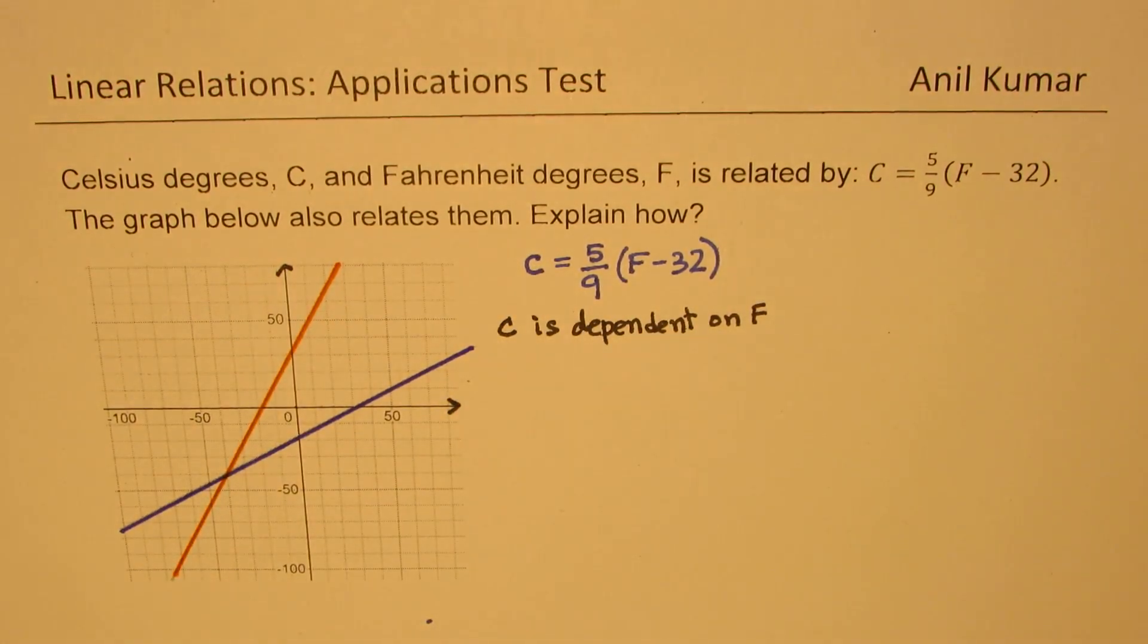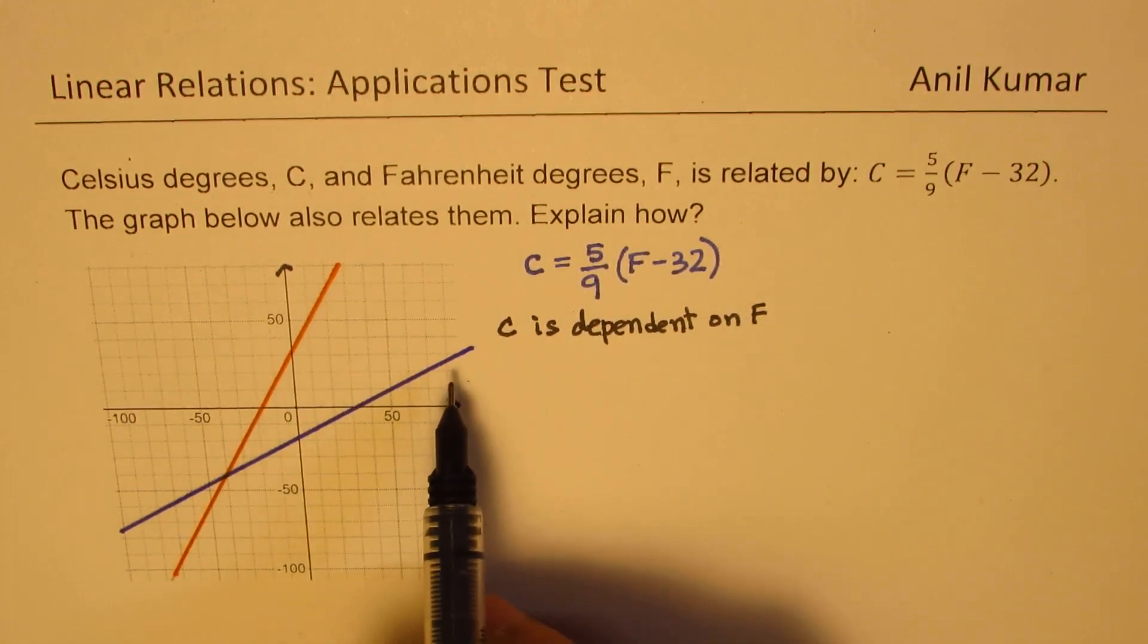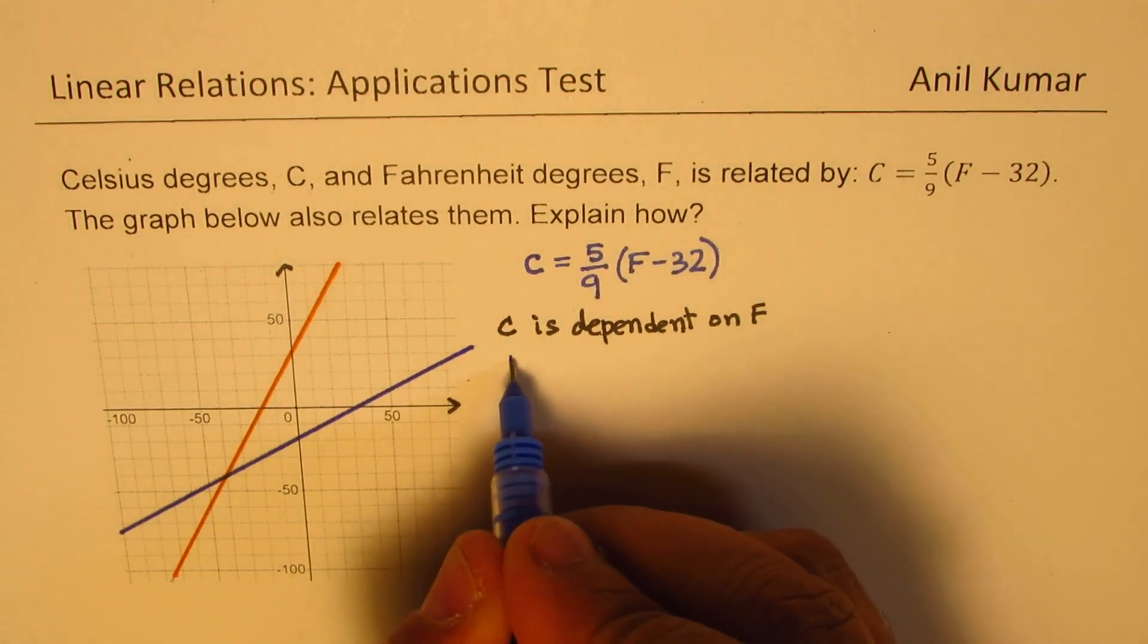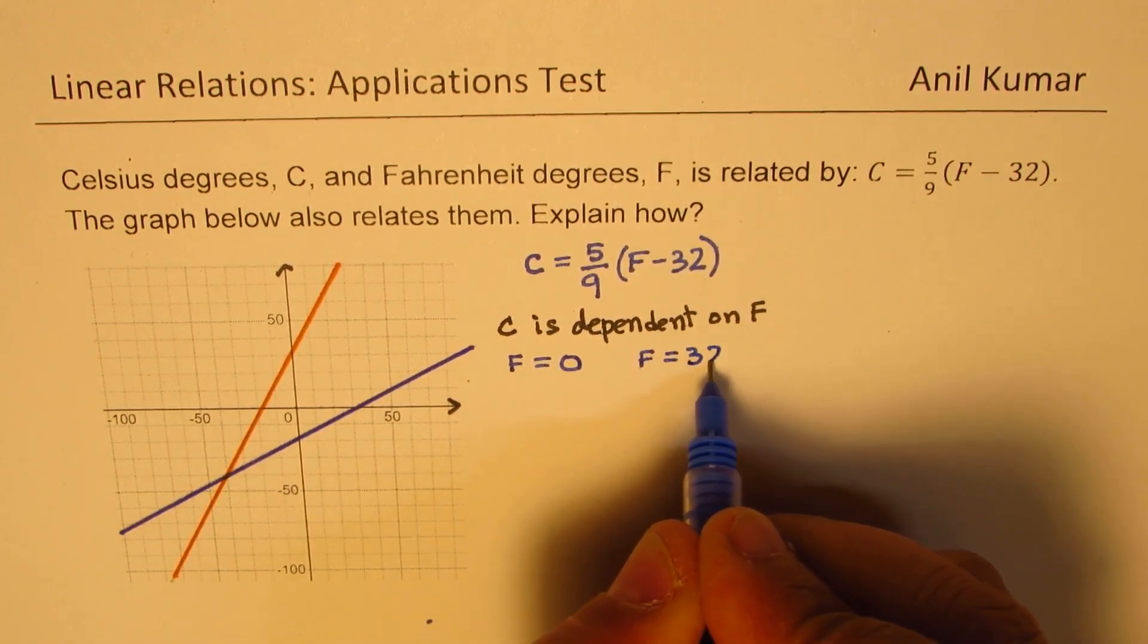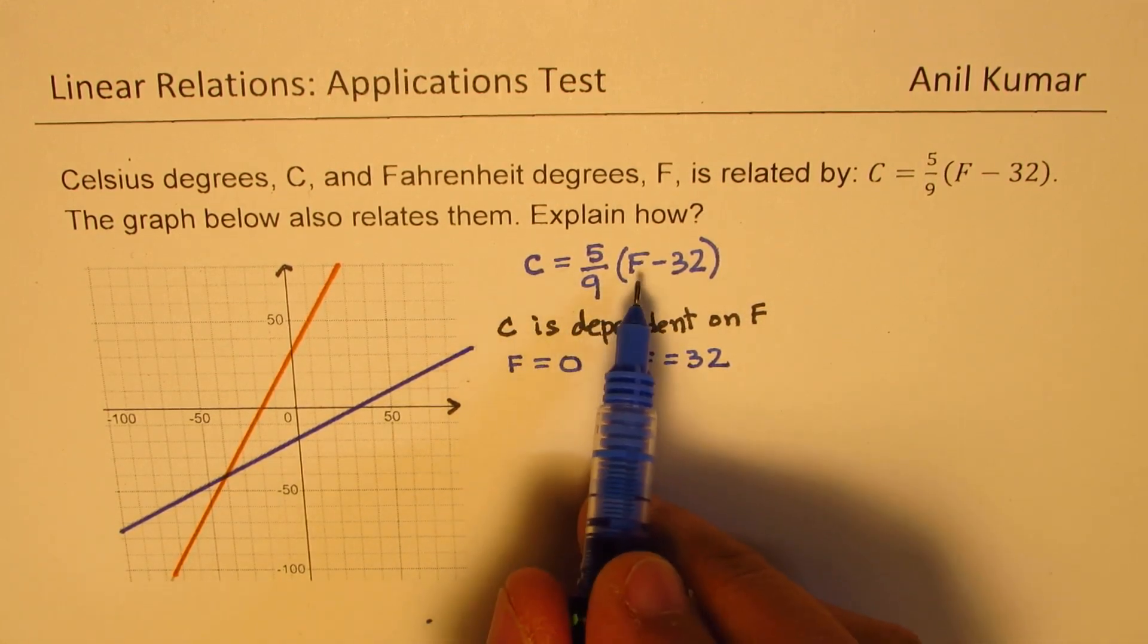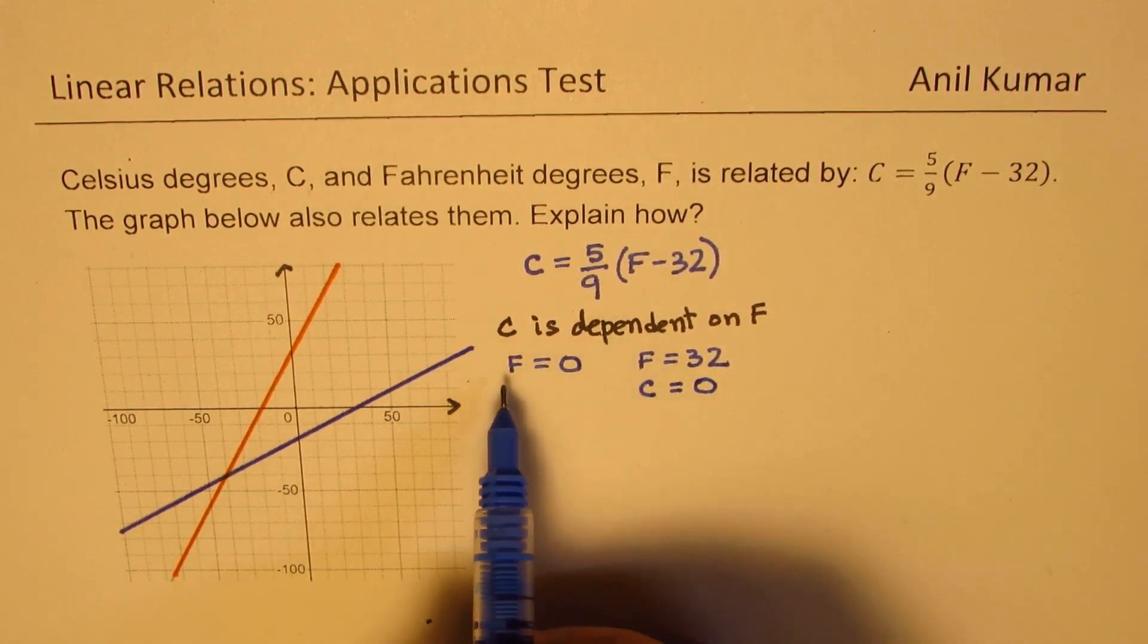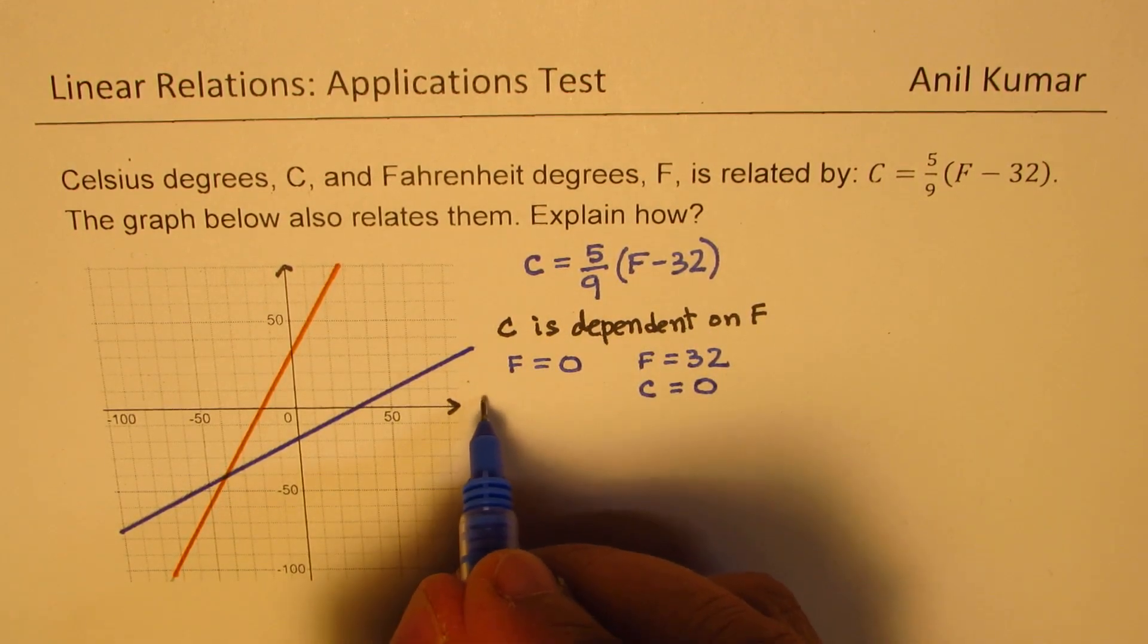We have two different graphs. How do we figure out which one belongs to which formula? Well, we could actually just test some values out. If F is equal to 0, and if F is equal to 32, these are two critical values which can tell us which graph relates C with F. If I write F equals to 32, the whole thing becomes 0. So C becomes 0. That was simple. But if I write F equals to 0, then I have to use calculator to calculate.